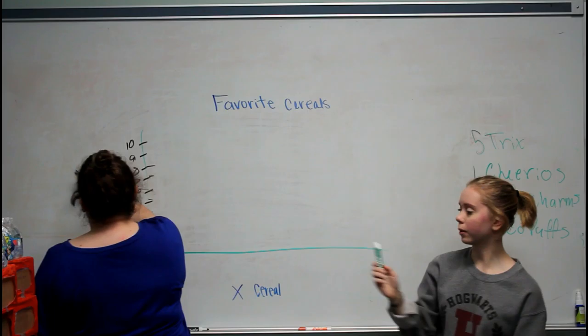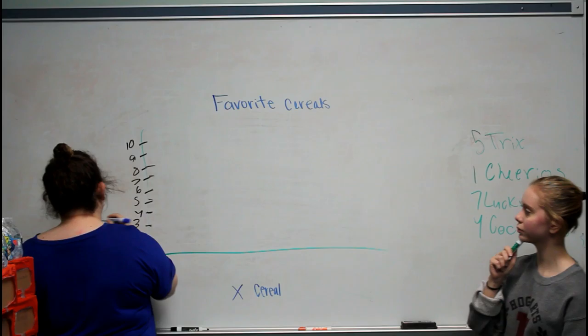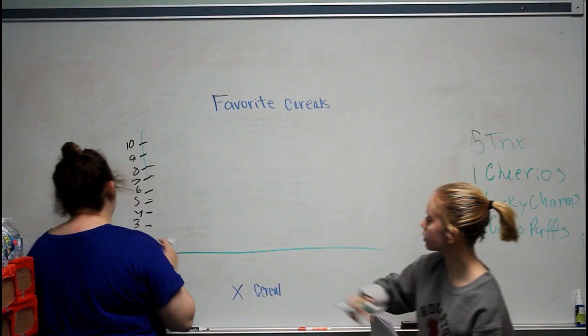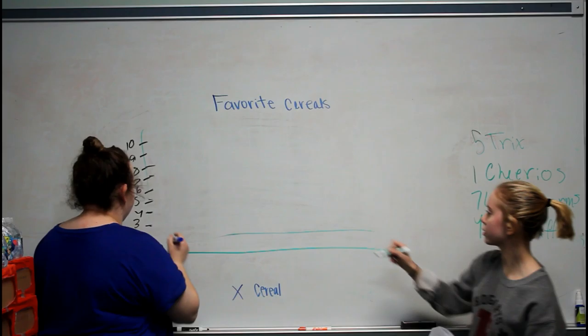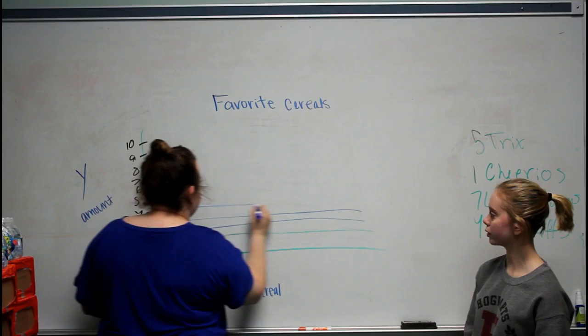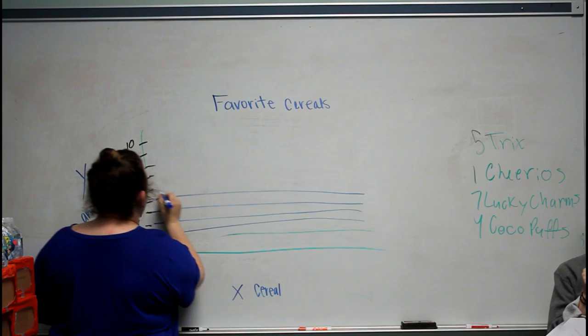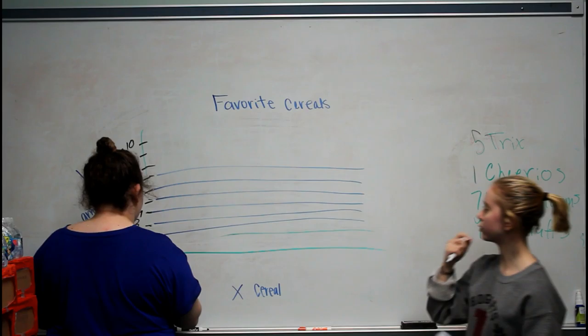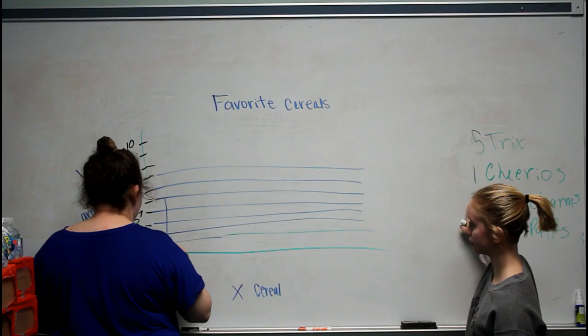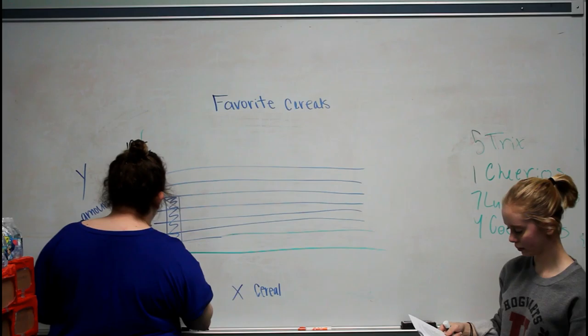And Barbara, what is the axis that goes up and down? Y. And what could we call that one? Numbers or amount — let's do amount. Since we already have our scale from 1 to 10, we need to make our extended lines going across. On our first bar, which is Trix, what number do we need to draw to, Michaela? Five. Since Lucky Charms is the largest at 7, we'll go up to 7, then color it in.